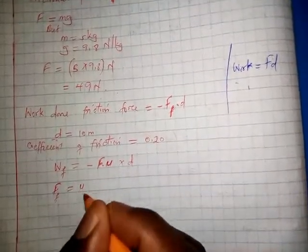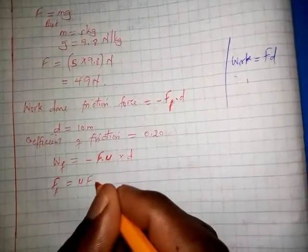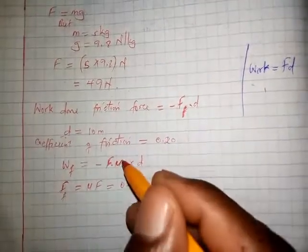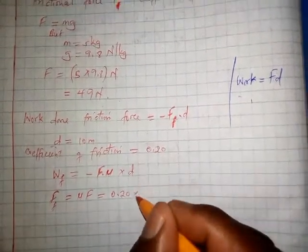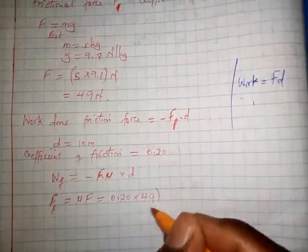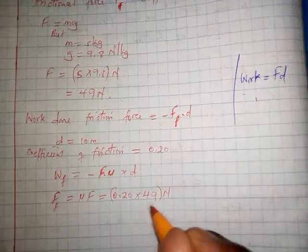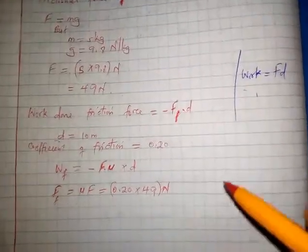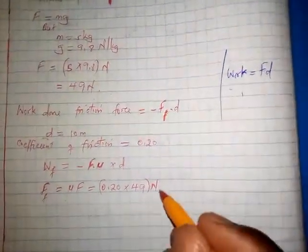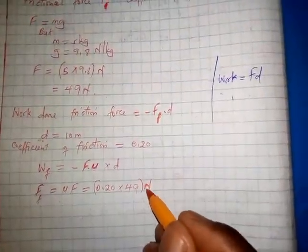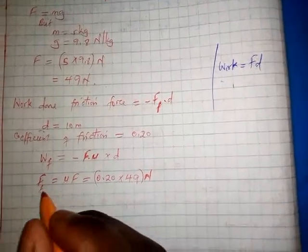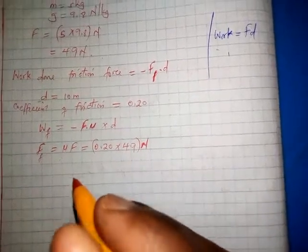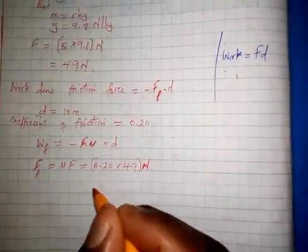The friction force equals mu times F, which is 0.20 times 49 Newtons. The coefficient of friction has no units, so the result is in Newtons — the units of the frictional force are Newtons.